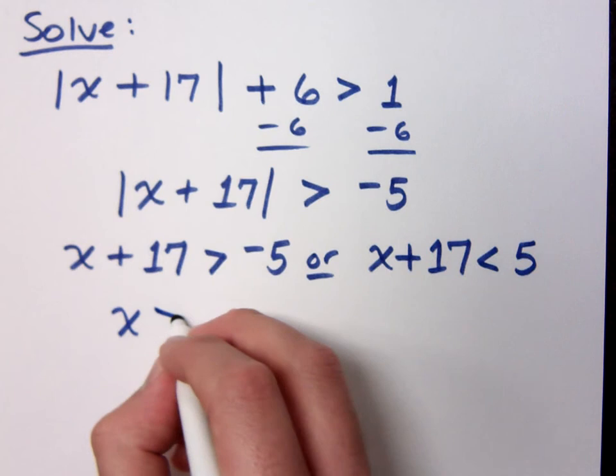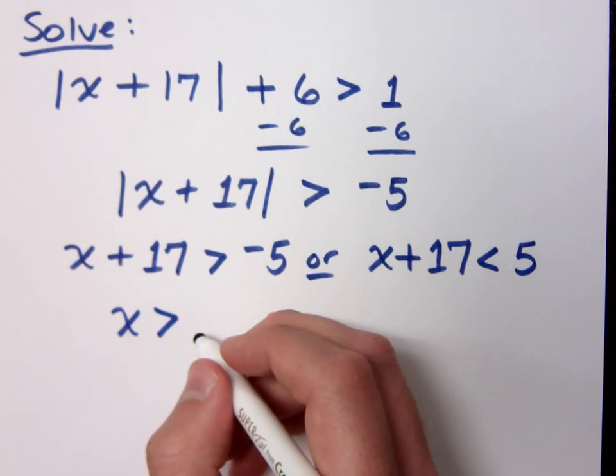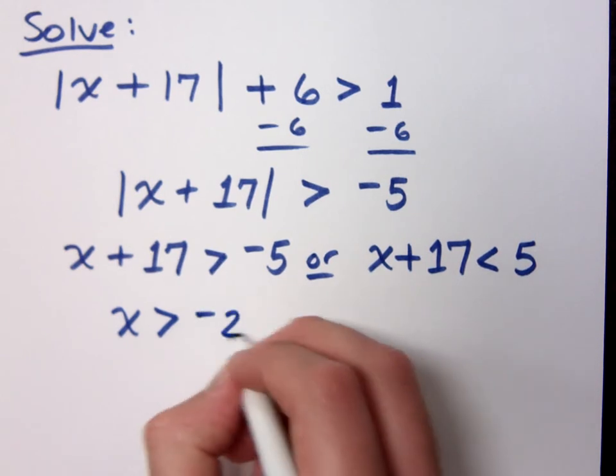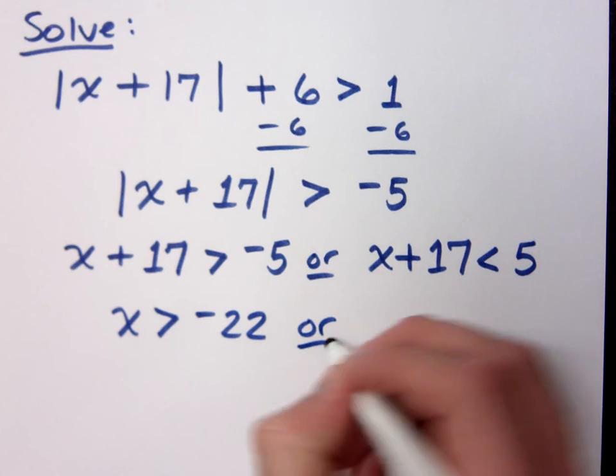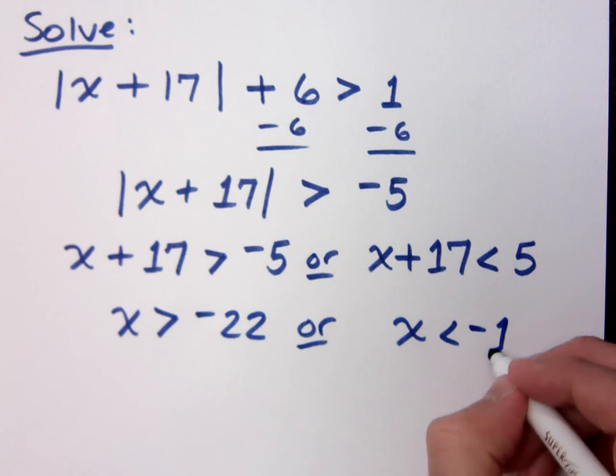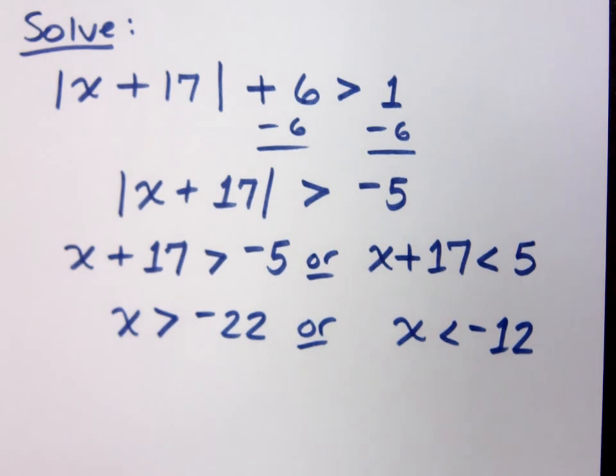I'll give you a hint. X is greater than what? Seriously guys, you just got to move the 17 over. It's negative 22 or what? Move the 17 to the other side. Negative 12. What does the word or mean? Or means what? You said it's union. So it's, the word union means you just put everything together, right?